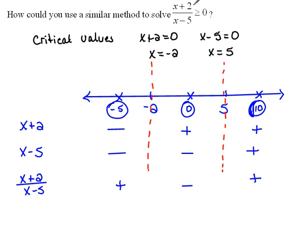Now we're going to choose the areas that make our statement true. Our statement said that this division has to be greater than or equal to 0. That means they are positive. So we want this area and this area. So now to write that out, we would say, starting at the left, this would be negative infinity all the way up to negative 2.